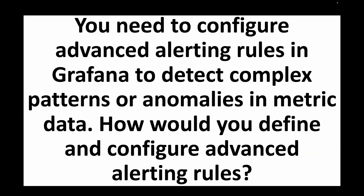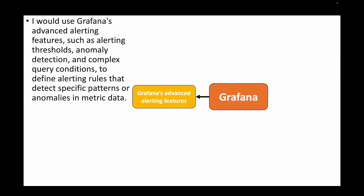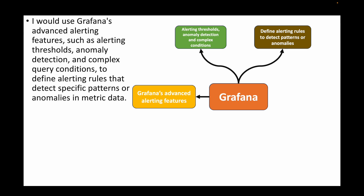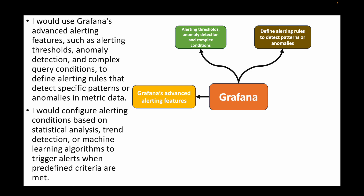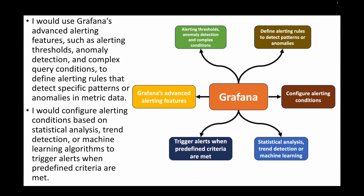The next question: you need to configure advanced alerting rules in Grafana to detect complex patterns or anomalies in metric data — how would you define and configure advanced alerting rules? We can make use of Grafana's advanced alerting features such as alerting thresholds, anomaly detection, and complex query conditions. We can configure alerting conditions based on statistical analysis, trend detection, or machine learning algorithms to trigger alerts when predefined criteria are met.